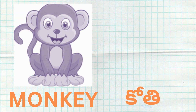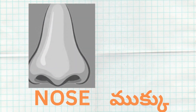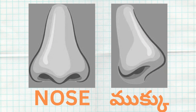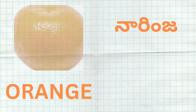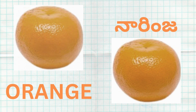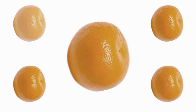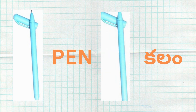M for Monkey. Monkey Ante Kodi. N for Nose. O for Orange. Orange Ante Naringa. P for Pen. Pen Ante Kalam.